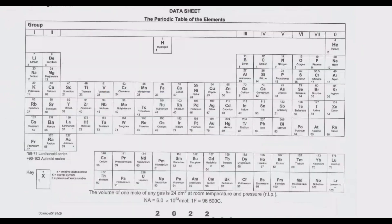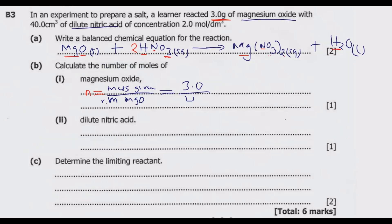We know the mass is 3.0 g. Now let us go to the periodic table and find the relative molecular mass of magnesium oxide. MgO: the mass number of magnesium is 24, plus the mass number of oxygen which is 16, giving 40. So 40 is the relative molecular mass of magnesium oxide. We put 40 in the denominator and divide: 3.0 ÷ 40 = 0.075 moles.